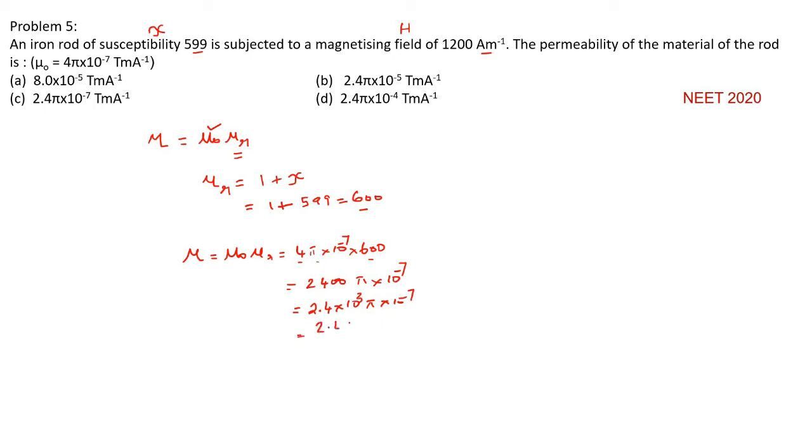So 2.4 pi into 10 to the power of 3 is here, minus 7 is here. So 10 to the power of minus 4.